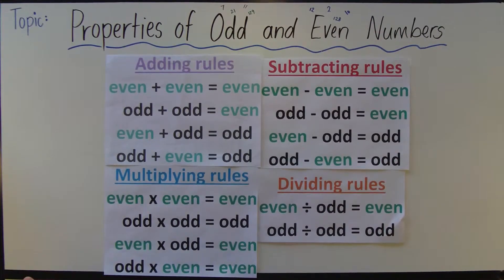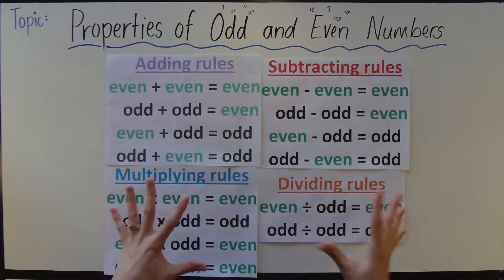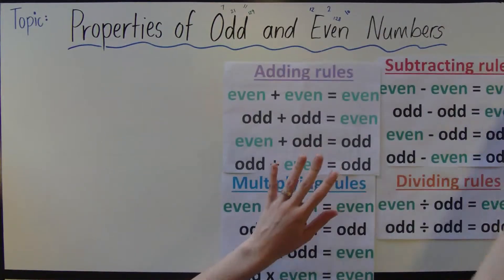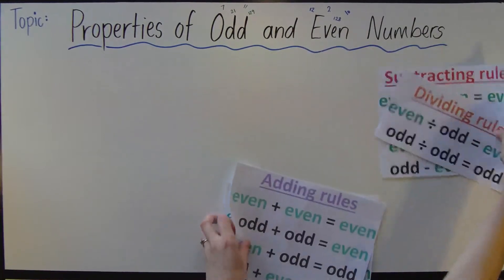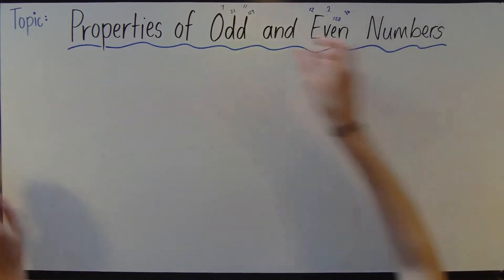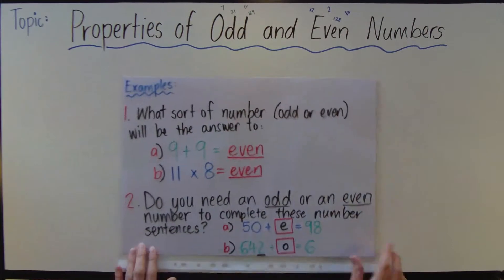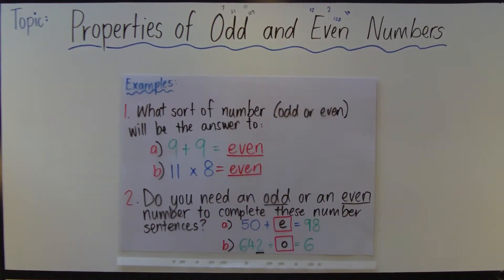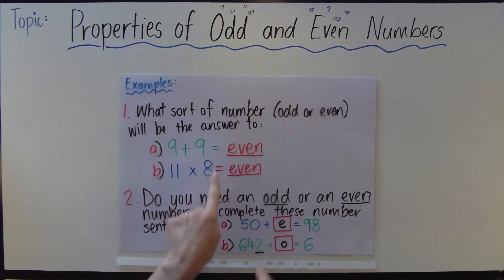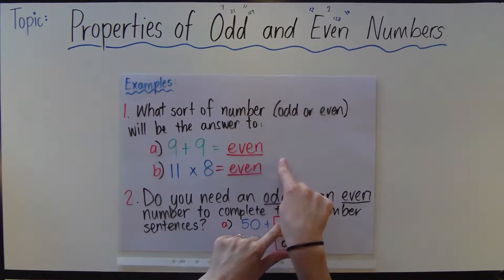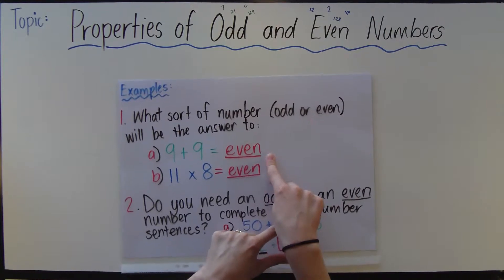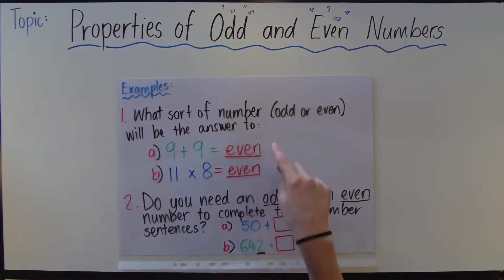Let's move on to some examples of using these sorts of rules. Here we've got question 1: what sort of number, odd or even, will be the answer to 9 plus 9? I've already got the answer here, which is even, and I'll just quickly rub off the bottom ones down there.